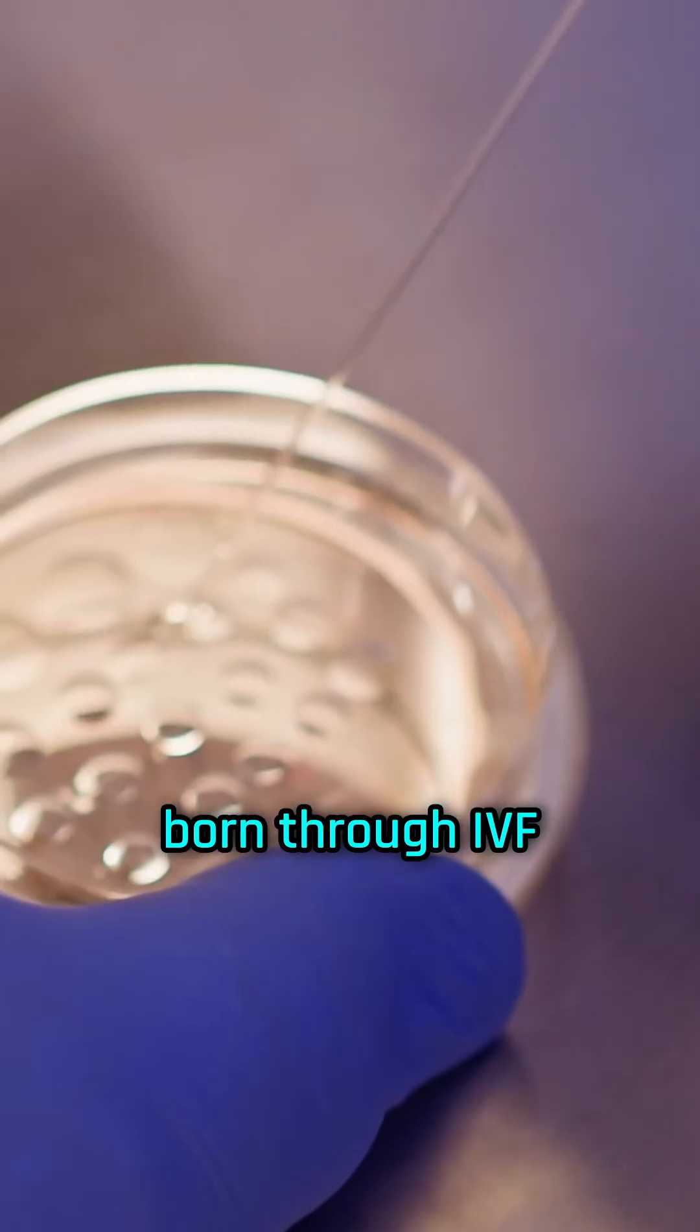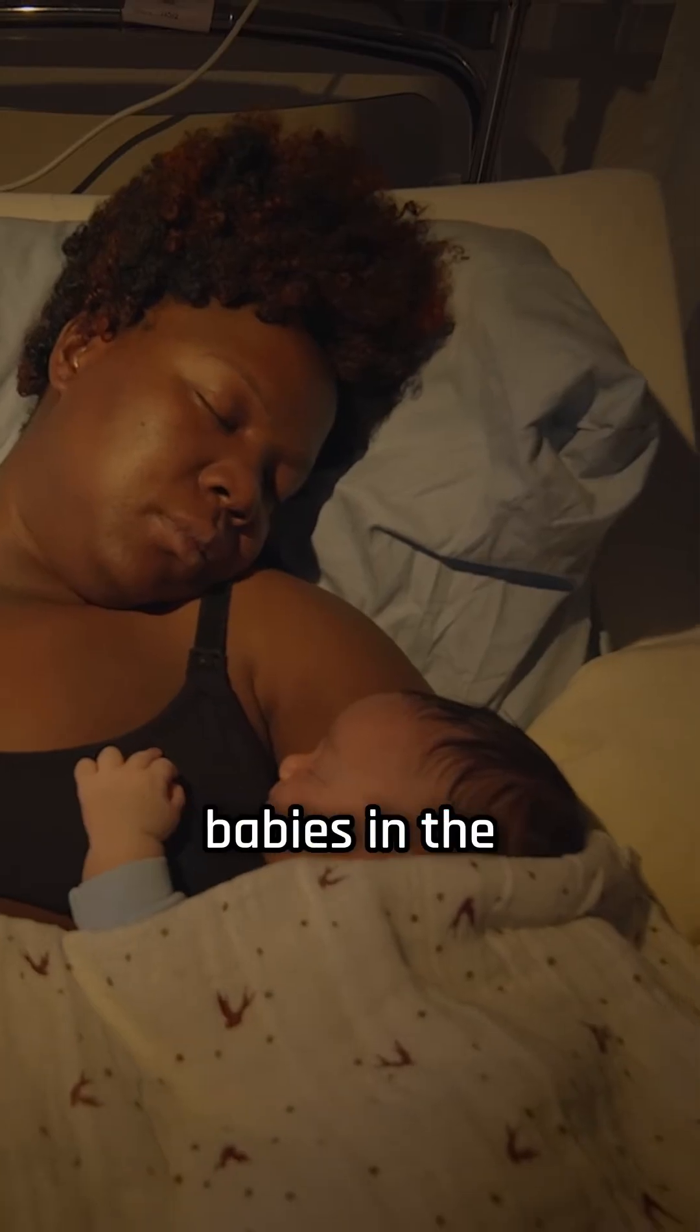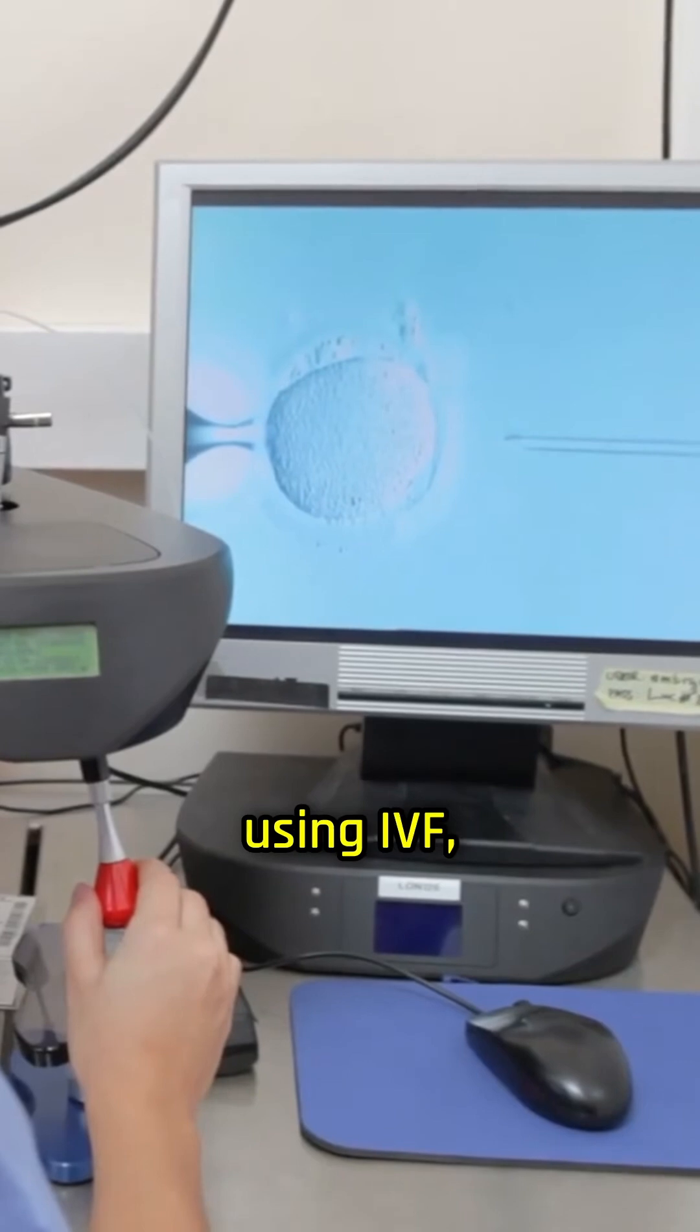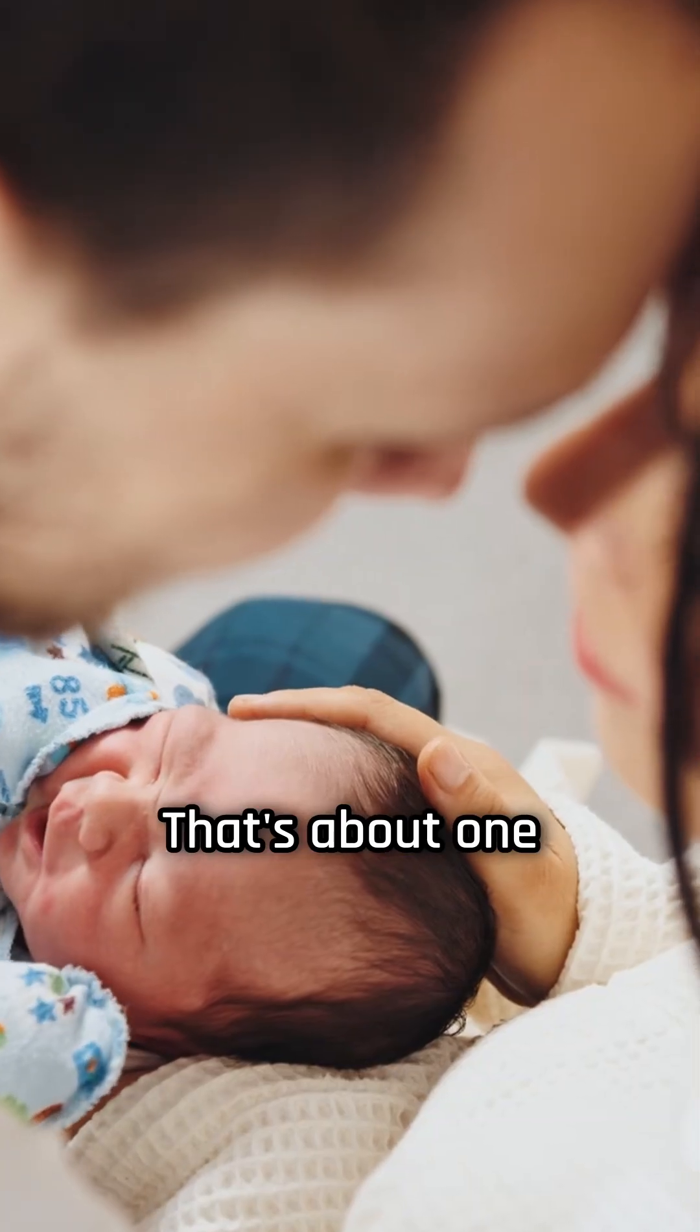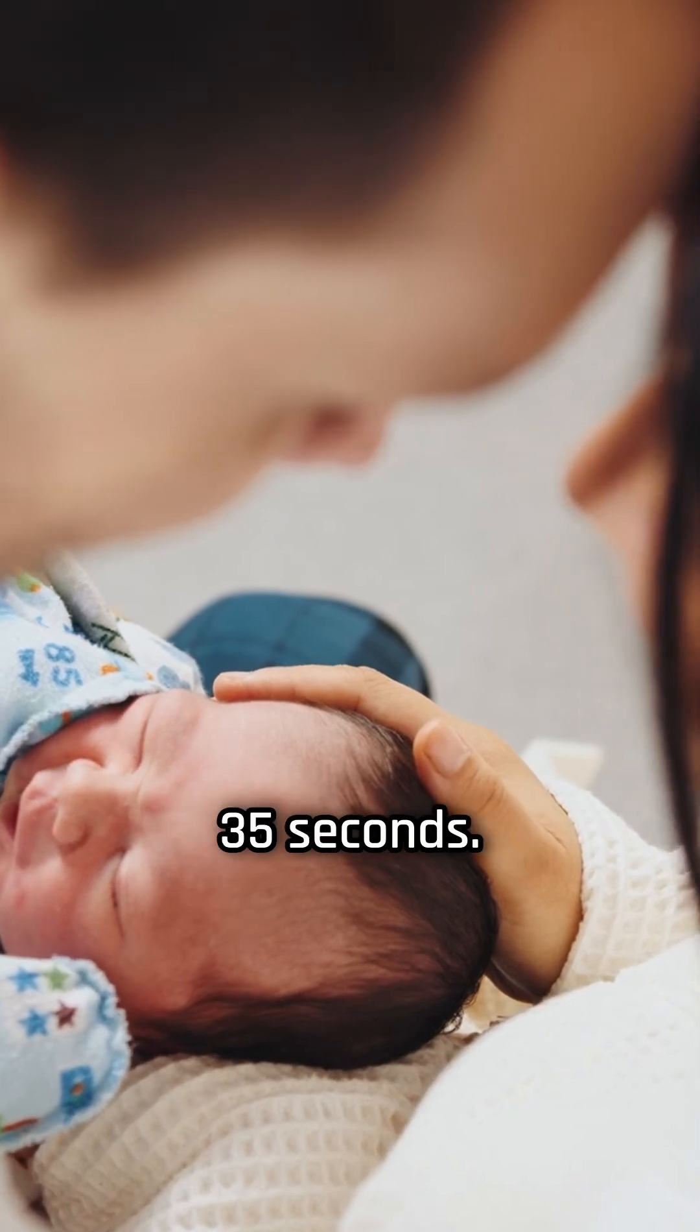Guess how many babies have been born through IVF worldwide? Around 13 million babies in the last four decades were born using IVF, according to the first global estimate of assisted reproductive technology. That's about one IVF-conceived child born every 35 seconds.